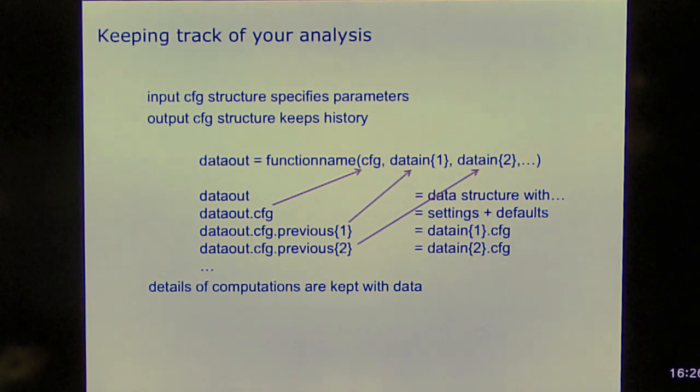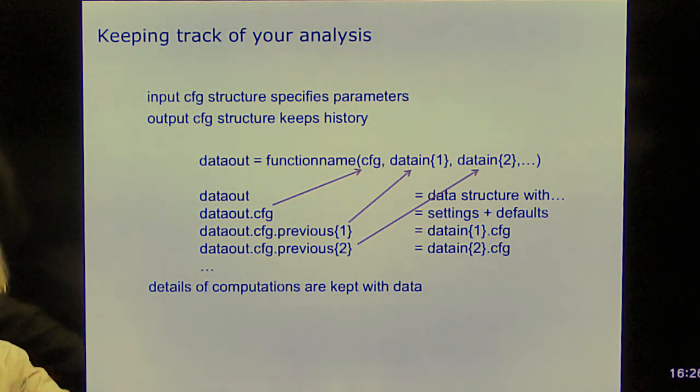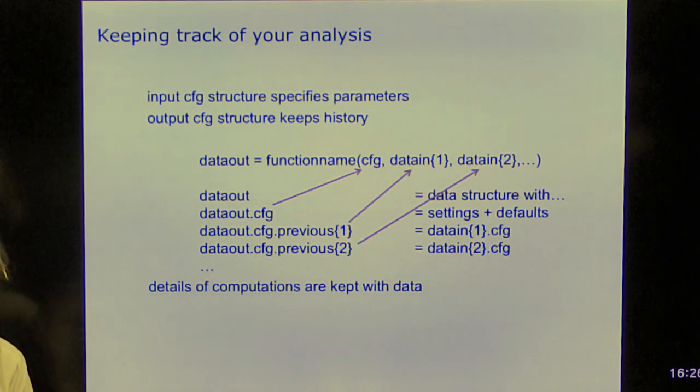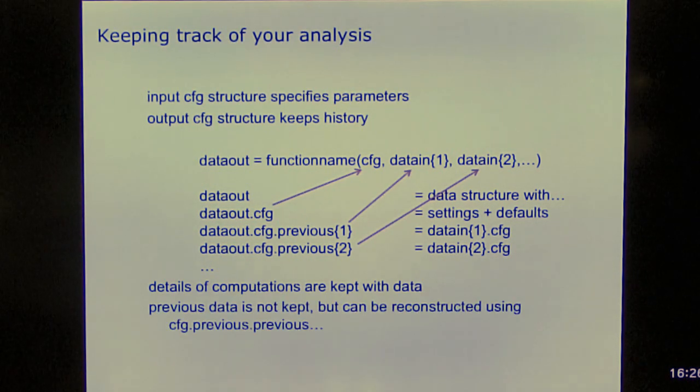So data out.cfg.previous contains the details on the previous computational steps. So that means that the details of the computations are kept with the data. The data itself is not kept, at least not by FieldTrip. If you want, you can keep all the data on disk, but at a certain point you might have so many data that you have to weed out. If, at the end of the analysis, if you have a figure, then in that figure you still have all the details of how, all the steps that were taken and how you can reconstruct the figure. That means that you can actually check prior to putting the figure in your publication whether you're really looking at the appropriate piece of data that has been processed such as you've described in your method section. So previous data is not kept, but it can be reconstructed.